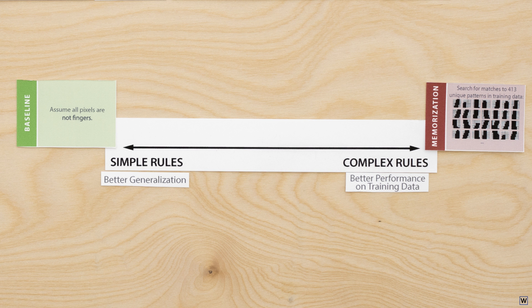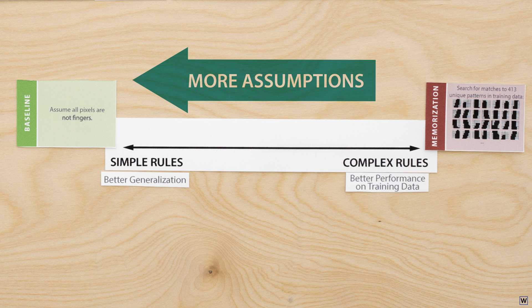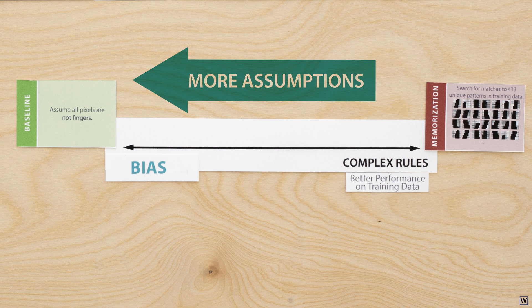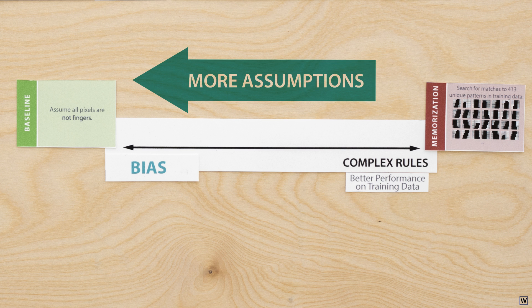Each solution along our spectrum represents a specific trade-off between our two goals. As we move to the left, we encounter less and less complex rules and better and better generalization. These types of solutions make more assumptions about our final result, specifically that it will be simple. This assumption is often called bias. More biased solutions make more assumptions, result in simpler rules, and are better generalizers.